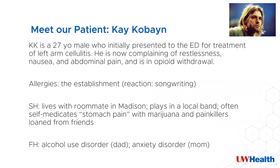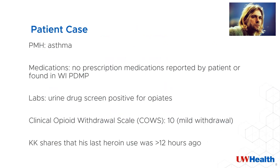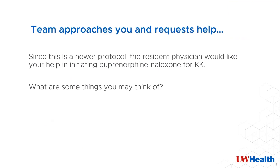I'm going to introduce our patient, Kate Cobain, who we will be following for this presentation. He is a 27-year-old male who presents to the emergency department for treatment of left-arm cellulitis. He is now complaining of restlessness, nausea, and abdominal pain, and is in opioid withdrawal. His allergies are listed here. He lives in Madison with his roommate, plays in a local band, and often self-medicates a stomach pain he's had for a while. He does not report taking any medications, and you do not find a record in the Wisconsin PDMP. His urine drug screen is positive for opiates and his COWS score is 10. He shares that his last heroin use was more than 12 hours ago. The team approaches you and requests your help, since this is a newer protocol, and the resident would like your help in developing an induction plan for buprenorphine naloxone.